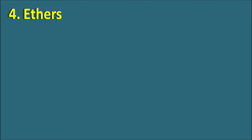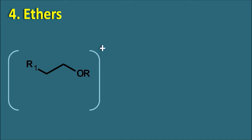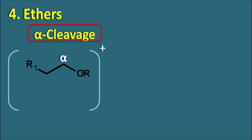Fourth one is the ethers. Ethers can undergo alpha cleavage. This is the alpha carbon, and the alpha bond is the bond between the alpha carbon and the adjacent carbon. In ethers, it is having oxygen instead of carbon (unlike aldehydes where it is the bond between the carbonyl carbon and the alpha carbon). The cleavage takes place such that they form a fragment ion along with a neutral fragment.